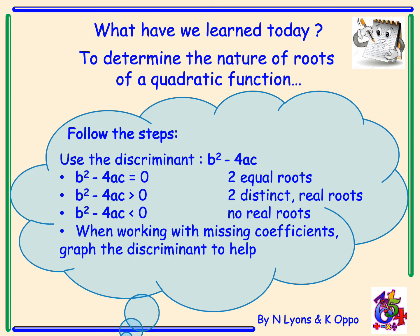To determine the nature of roots of a quadratic function, use the discriminant b squared minus 4ac with these conditions: if it equals zero, there are two equal roots (or one repeated root); if it's greater than zero, there are two distinct real roots; if it's less than zero, there are no real roots. When working with missing coefficients, use the discriminant to help you.